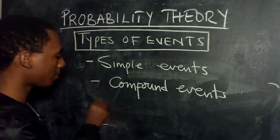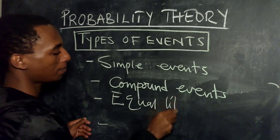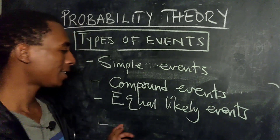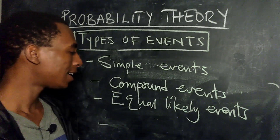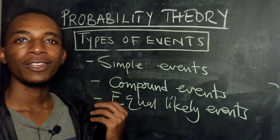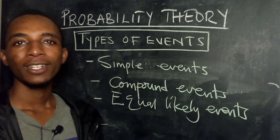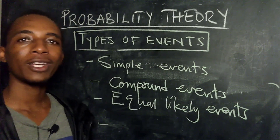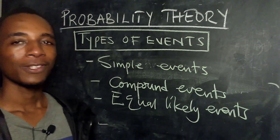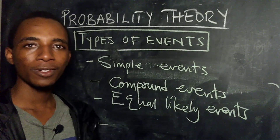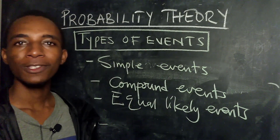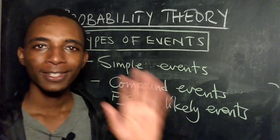The last category of events is equally likely events. As the name suggests, these are events that have equal chances of happening. For example, when tossing a coin, the probability of getting a tail is one-half and the probability of getting a head is also one-half, so the two events have equal likelihood to occur — we call those equally likely events. In the next video we'll look at union and intersection of events and start doing some calculations. If you like this video, give it a thumbs up — see you in the next one!